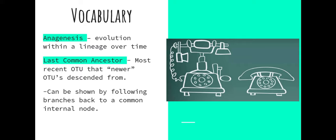Last common ancestor refers to the most recent OTU that a set of OTUs is descended from. To find the most common ancestor between a set of OTUs one can follow the branches of the phylogenetic tree to a common internal node.